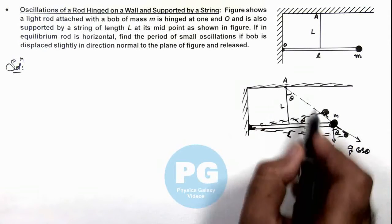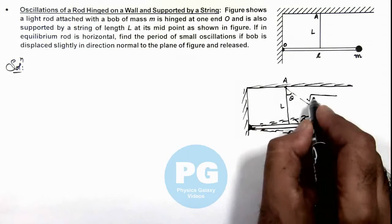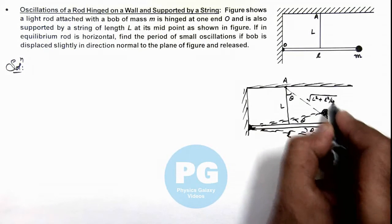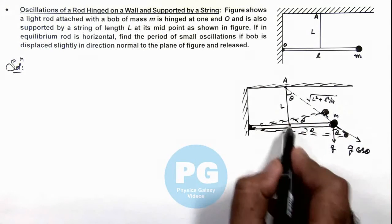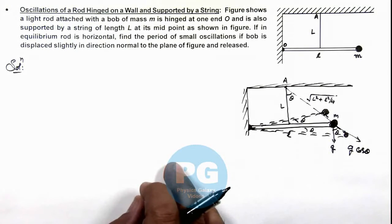This length we can simply write as √(L² + L²/4), since the string is attached to the midpoint of the rod, which is L/2.